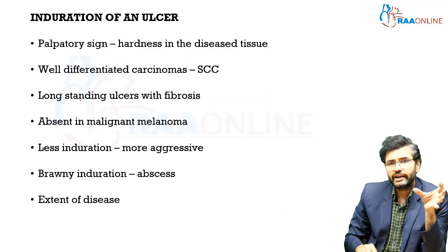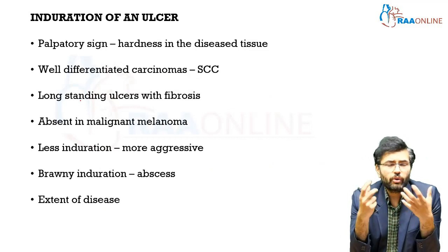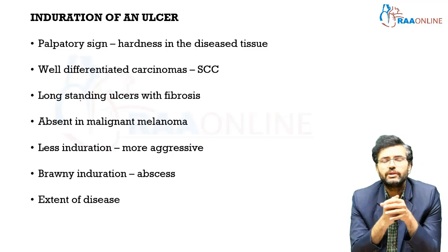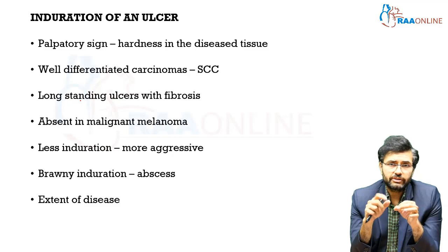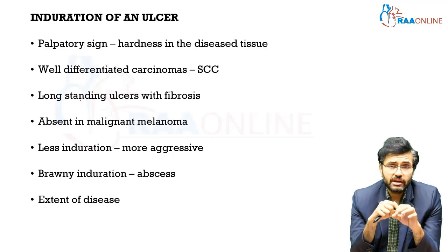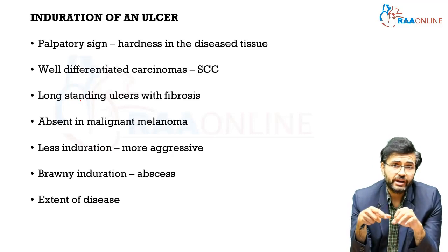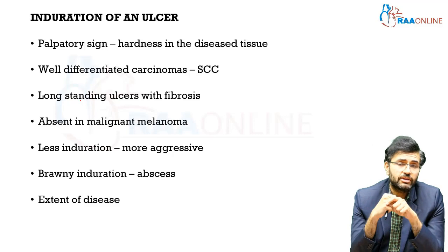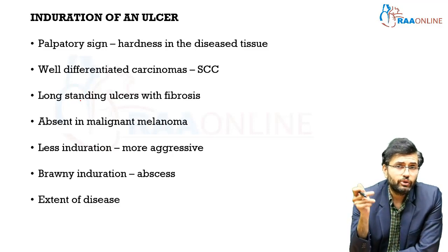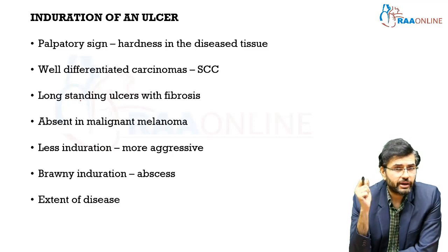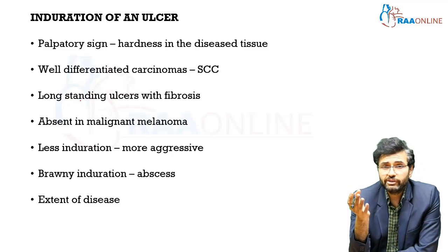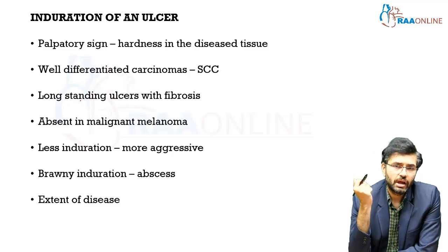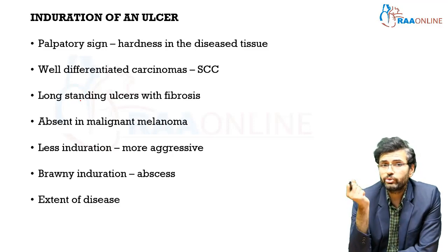When describing an ulcer, it is important not only to identify the characteristics of the ulcer itself, but also to look and feel around it for surrounding tissue changes. One important surrounding tissue change is induration. Induration is a palpatory sign — you can palpate it but never see it. It is basically thickening or hardness in the surrounding diseased tissue, very commonly associated with malignancies, particularly well-differentiated carcinomas like squamous cell carcinomas. Long-standing venous or trophic ulcers can also cause extensive fibrosis leading to induration.